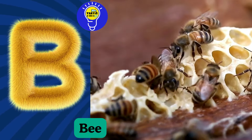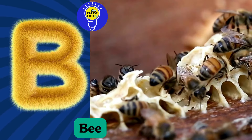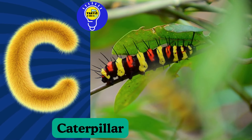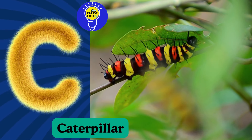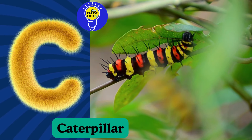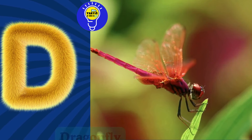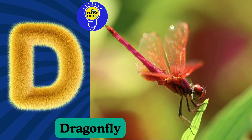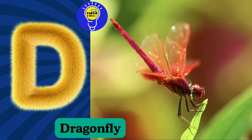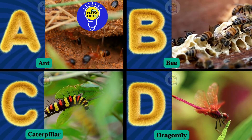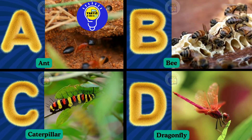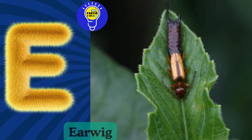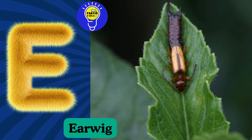A is for Ant. A, A. Ant. B is for Bee. B, B. Bee. C is for Caterpillar. C, C. Caterpillar. D is for Dragonfly. D, D. Dragonfly.